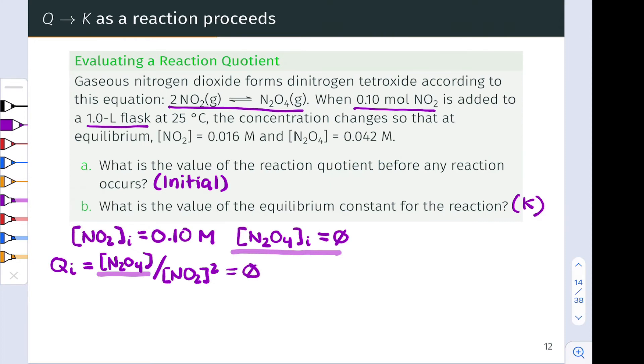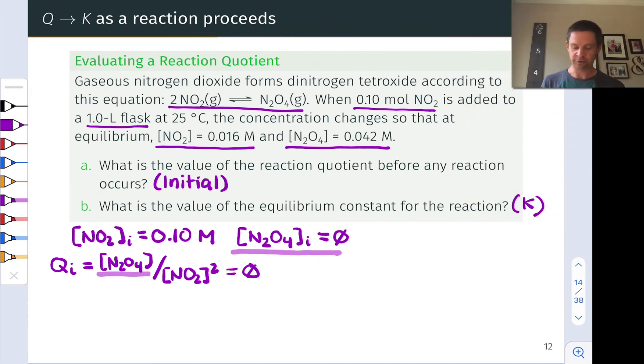For reasons that we'll see in the next video, this implies that the reaction will go forward. And we can also understand that the reaction goes forward by realizing that at equilibrium, we now have some NO2 left over 0.016 molar. And we now have some N2O4 in the reaction mixture 0.042 molar. And so we have solved A essentially realizing that the initial Q is equal to 0. How do we determine the equilibrium constant?